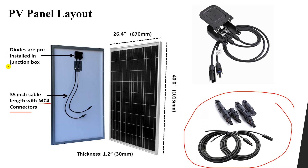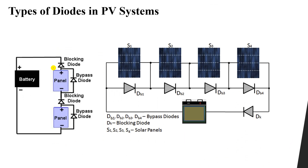Inside the junction box there are diodes. We have two types of diodes in the PV system. The first type is the bypass diodes, which we discussed before in order to solve the problem of the shading effect. Each part of the panel has bypass diodes to bypass a section of the panel if it has a shadow or shading effect.